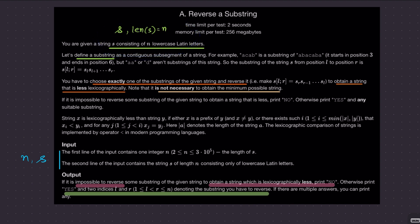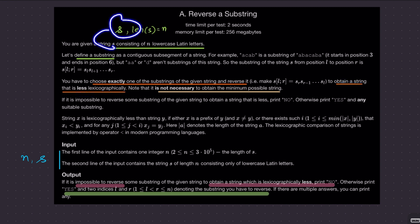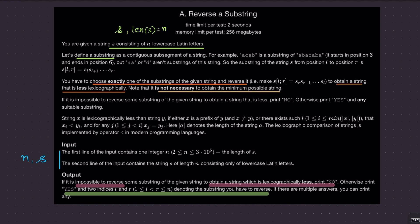We are given a string S of length N which consists of only lowercase Latin letters, that is letters from A to Z. A substring is just a continuous subsegment of the string. We want to choose exactly one substring of the given string, reverse it, and the string we obtain should be lexicographically less. The obtained string does not necessarily need to be the smallest possible string.